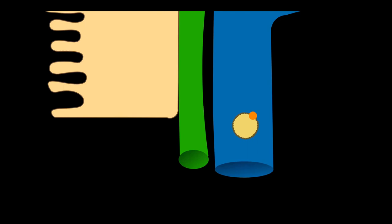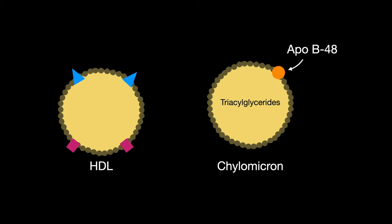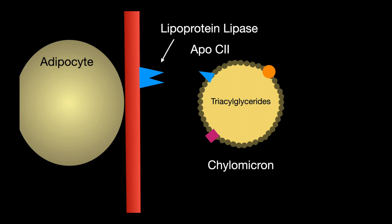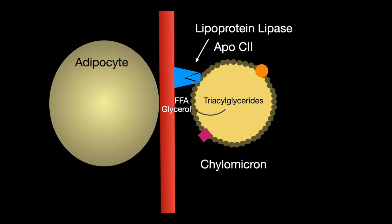A high-density lipoprotein tags the chylomicron with APOC2 and APOE. The APOC2 binds to lipoprotein lipase on the walls of the capillary that breaks down the triacylglycerides into free fatty acids and glycerol, which can then enter adipocytes.